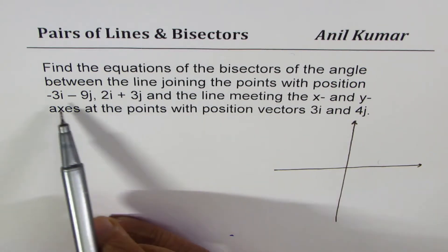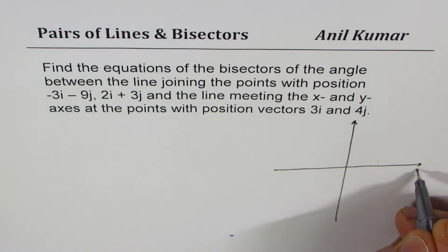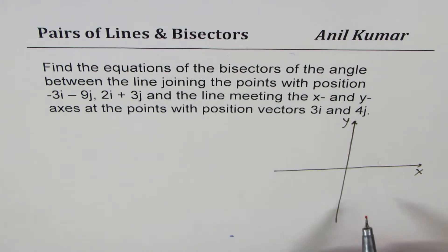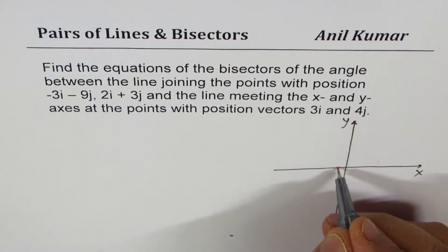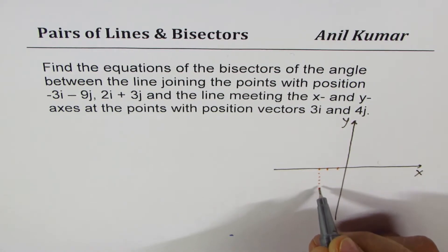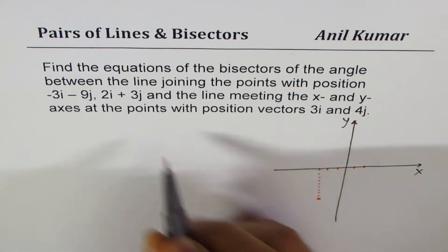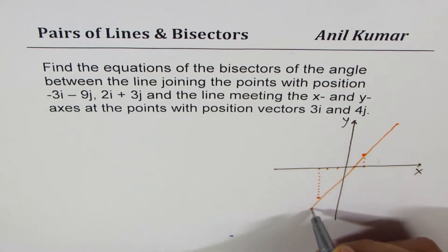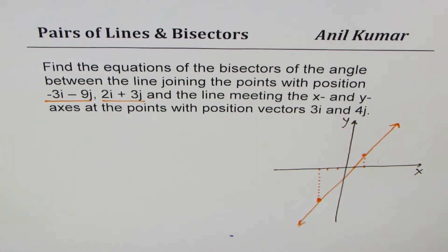What we are given here is the vector form. When I say points with position minus 3i minus 9j, i is along the x-axis and j is along the y-axis. So these are basically coordinate points. I'll sketch the graph to help you understand. This point minus 3i minus 9j means you go 3 units to the left and 9 units down. The other point is 2i plus 3j, so we go 2 units right and 3 units up. Joining these two points gives us the first line L1.